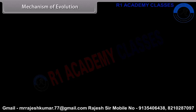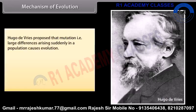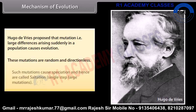Mechanism of evolution: Hugo de Vries proposed the mutation theory — that large differences arising suddenly in a population cause evolution. These mutations are random and directionless. Such mutations cause speciation and hence are called saltation, that is, single step large mutations.